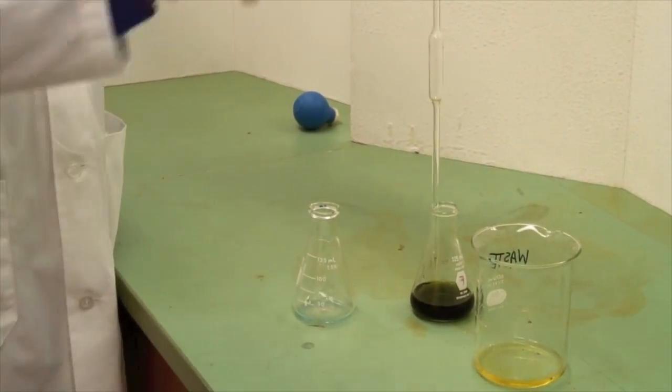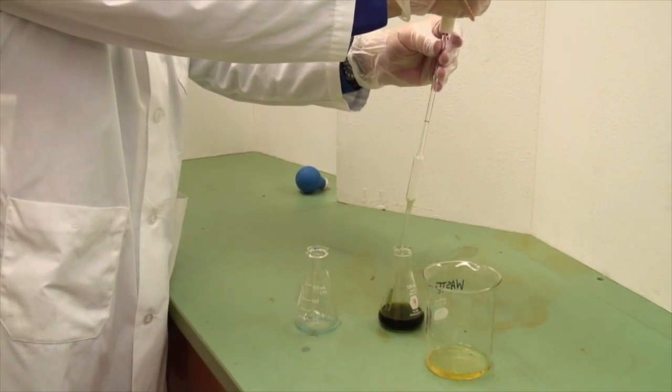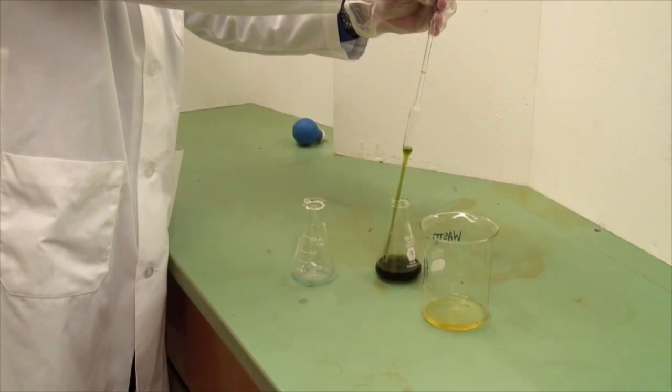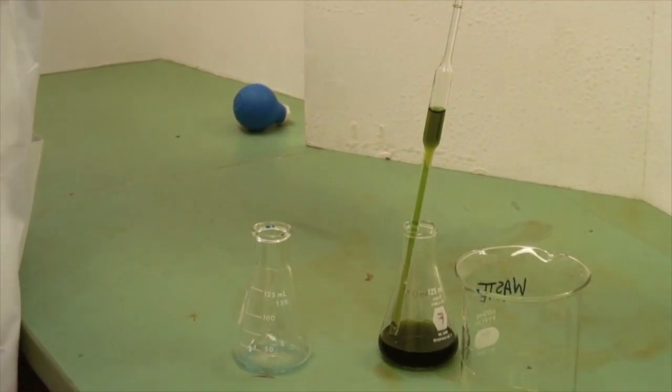We're now ready to dispense 10 milliliters into this flask. Flatten the pipette again and this time apply suction until the liquid in the pipette is above the calibration mark.